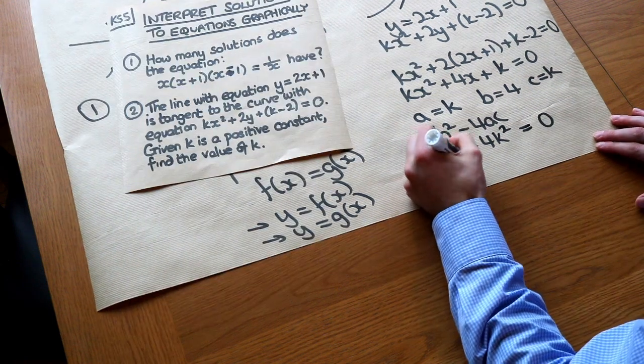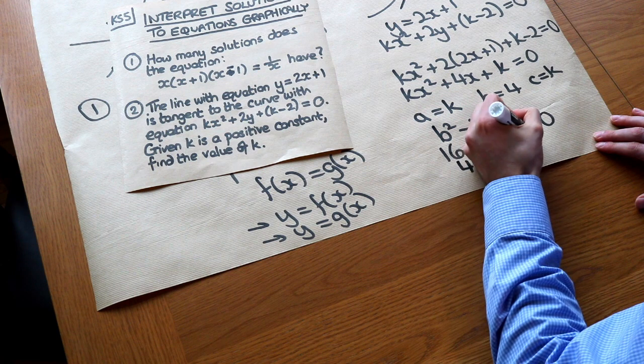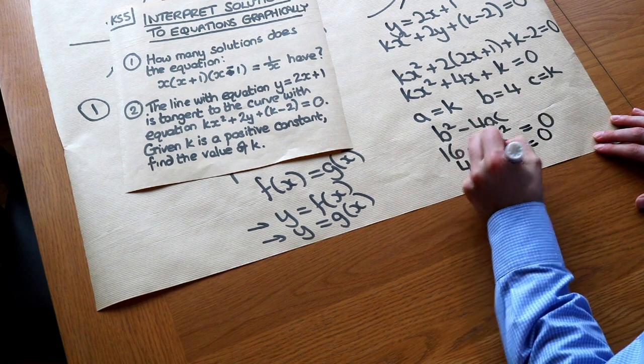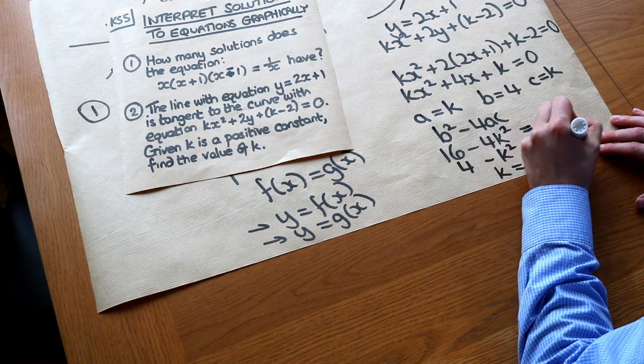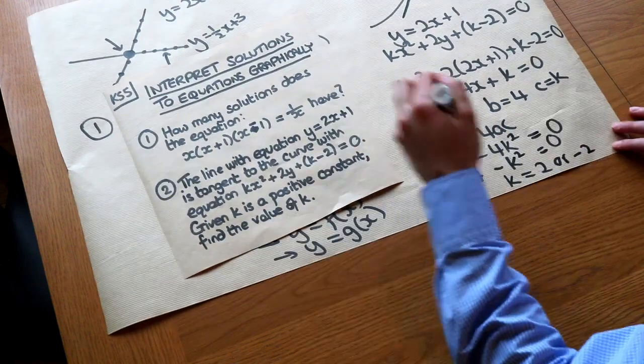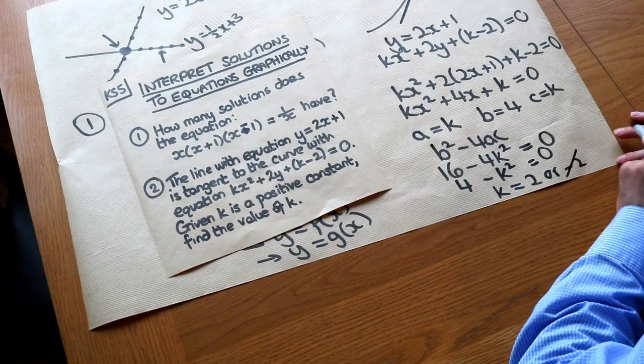Then if we divide by 4, we get 4 minus k squared equals 0. And we can see that k is equal to 2 or minus 2. But we're told that k is a positive constant, so k can only be 2.